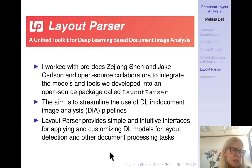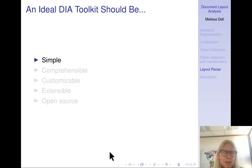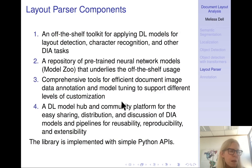I worked with Predocs Zhejiang Shen and Jake Carlson and open-source collaborators to integrate the models and tools that we developed into an open-source package called Layout Parser. The aim of Layout Parser is to streamline the use of deep learning in document image analysis pipelines. Layout Parser provides simple and intuitive interfaces for applying and customizing deep learning models for layout detection and other document processing tasks. We aim to make Layout Parser simple, comprehensible, customizable, extensible, and open-source.